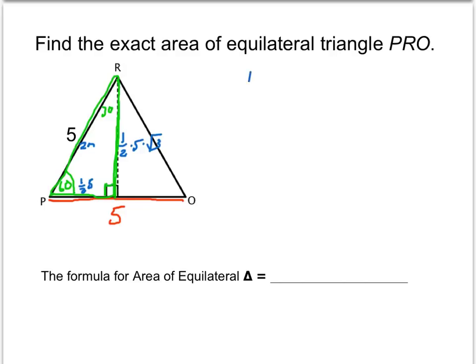And so the area of this triangle is 1 half base times height. Base is 1 half times 5, times the height, which is this length, times 1 half times 5, times root 3.